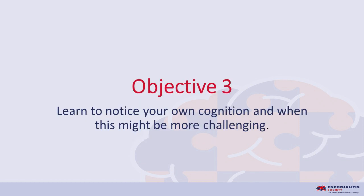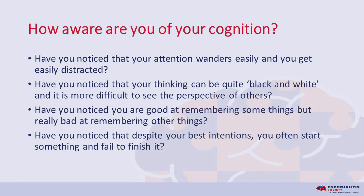Objective three: learn to notice your own cognition and when this might be more challenging. How aware are you of your cognition? Have you noticed that your attention wanders easily and you get easily distracted? Have you noticed that your thinking can be quite black and white, and it is more difficult to see the perspective of others? Have you noticed you are good at remembering some things but really bad at remembering other things? Have you noticed that despite your best intentions, you often start something and fail to finish it?